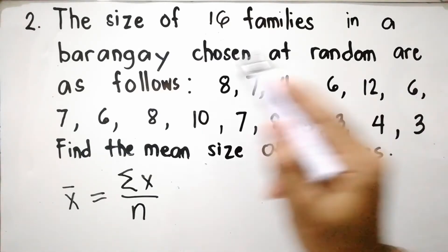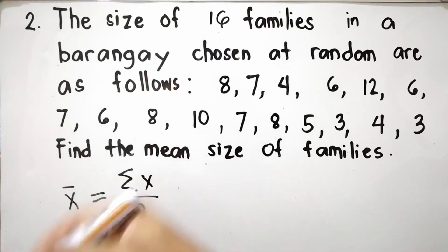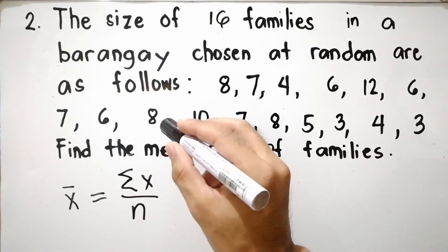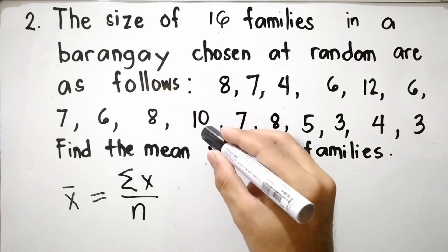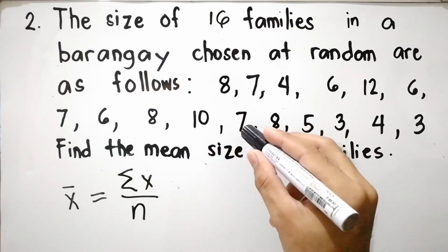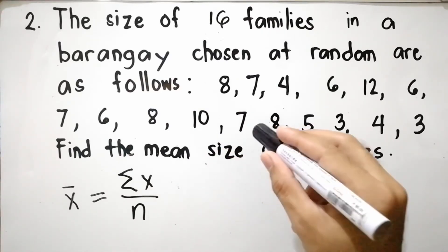Plus 6 equals 43, plus 7 equals 50, plus 6 equals 56, plus 8 equals 64, plus 7 equals 74, plus 7 equals 81.